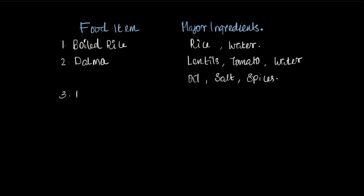Similarly, roti — what all goes into making roti, or what are the major ingredients of roti? Flour, wheat flour or what we call maida, and water definitely. Then salt for sure, and sometimes we put some ghee as well on top of the roti.